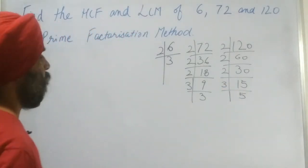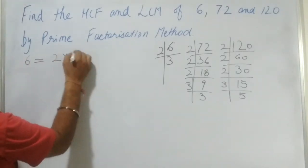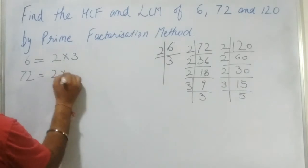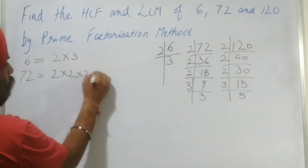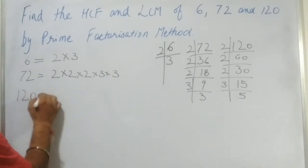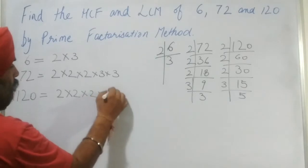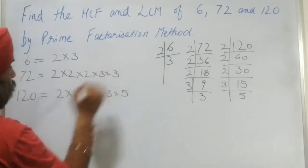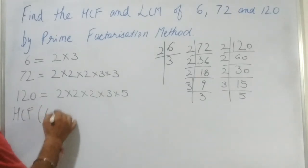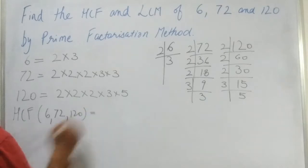So we have found the factors. Let's write it here. The factors of 6 are 2 and 3. The factors of 72 are 2 × 2 × 2 × 3 × 3. And the factors of 120 are 2 × 2 × 2 × 3 × 5. Now let's find the HCF of 6, 72, and 120.